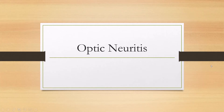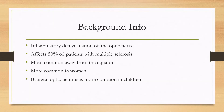Let's learn about optic neuritis. This is an inflammatory demyelinating disease affecting the optic nerve. It affects about 50% of patients with multiple sclerosis and is highly associated with this disease. In about 15 to 20% of patients with multiple sclerosis, it is the presenting symptom.